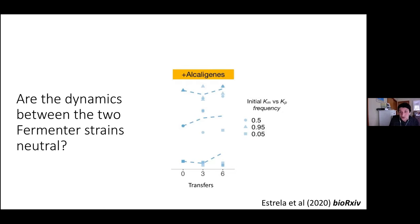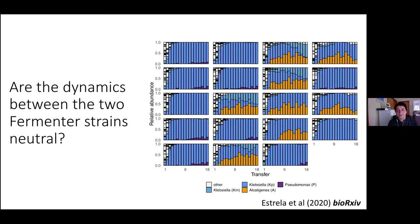This emergent neutrality emphasizes the importance of taking the full ecological context into account and the difficulties of inferring community dynamics from pairwise competition alone. We are now trying to really understand these types of dynamics further.